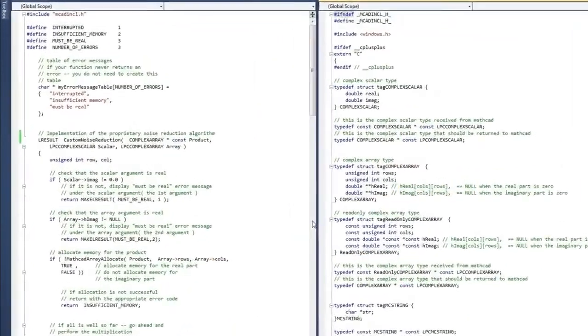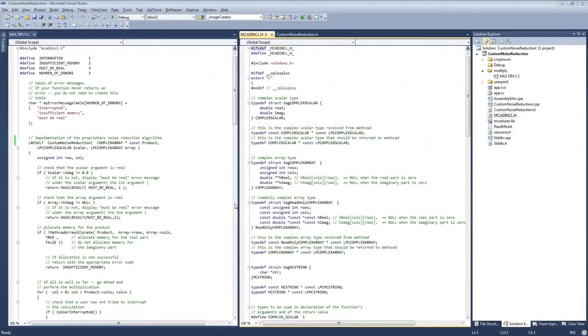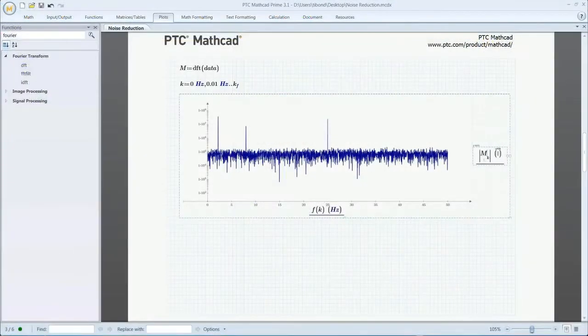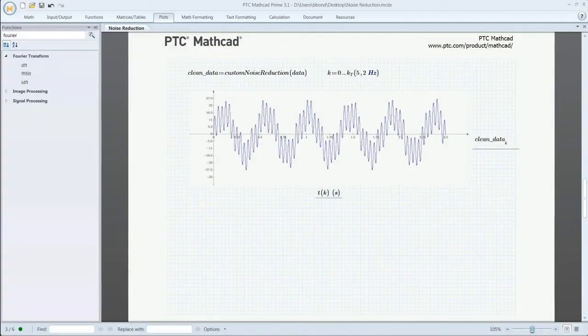For engineers who have existing user-defined functions written in C or C++, PTC MathCAD allows the code to be compiled into a custom function. This capability allows engineers to focus on solving the problem at hand by invoking the function directly in the worksheet.